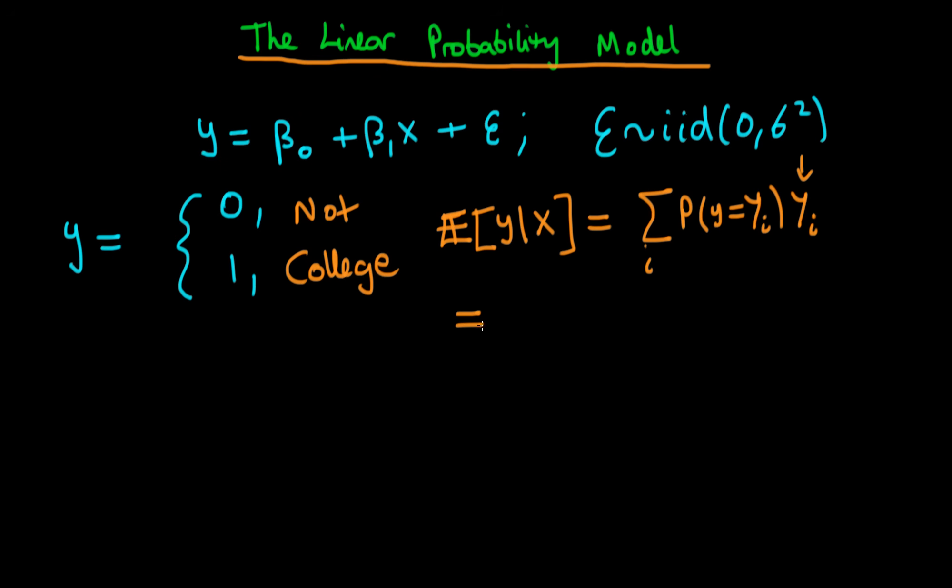For the case where our dependent variable just takes on two values, zero or one, this is given by the probability that y equals zero given we have x times zero plus the probability that y equals one given x times one. It's quite easy to see that this first term is just going to disappear because we're multiplying it by zero. Hence, the conditional expectation of y given x is just going to be equal to the probability that y equals one given we have x.